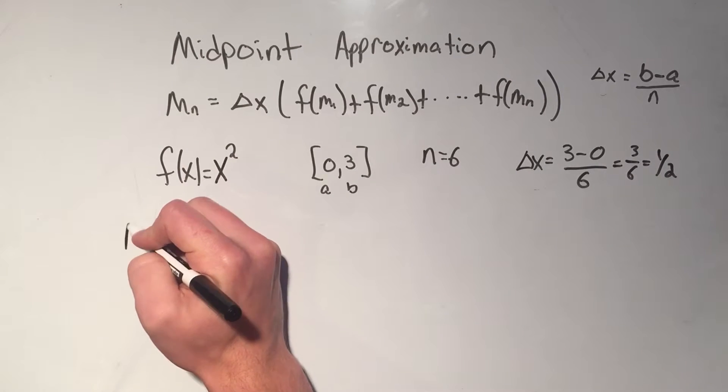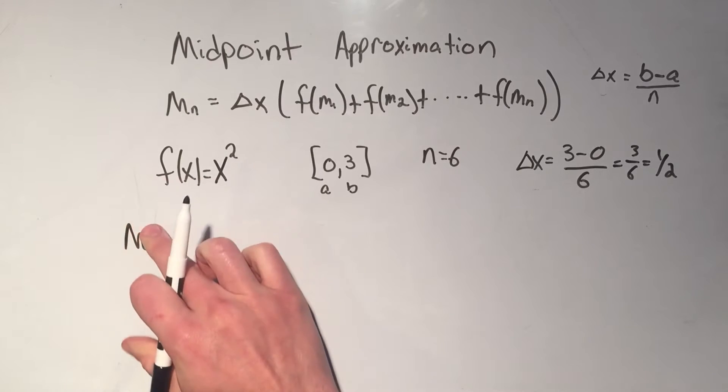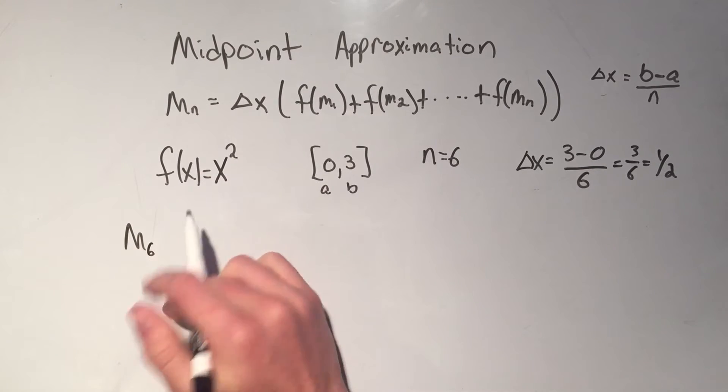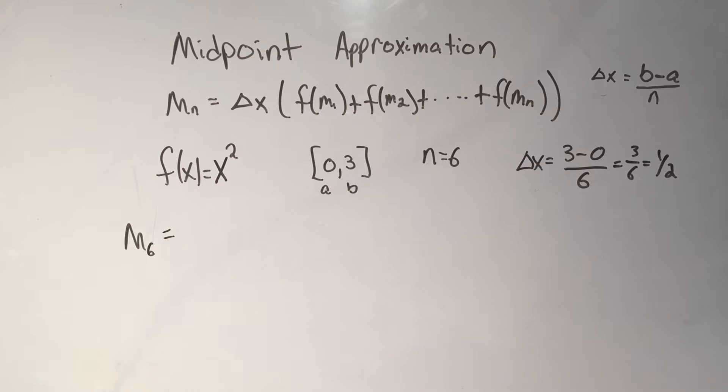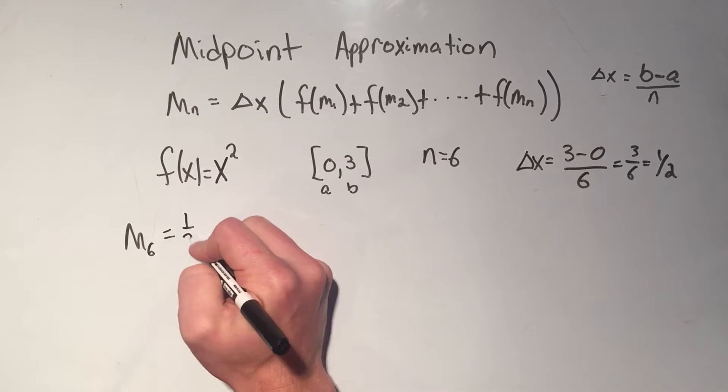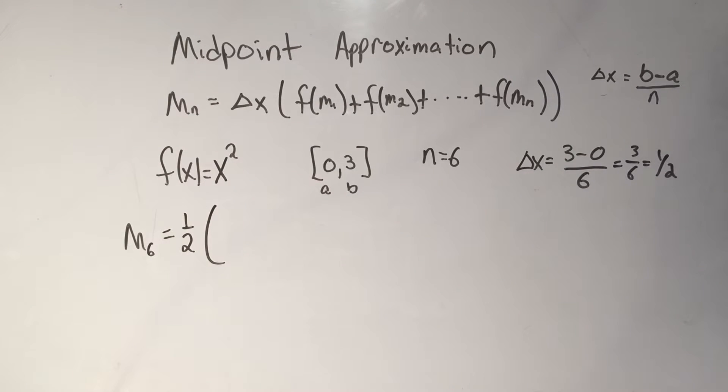Which means in my midpoint approximation, I guess I should write m6, since I'm using 6 rectangles, I'm going to have 1 half way out front of this whole thing.